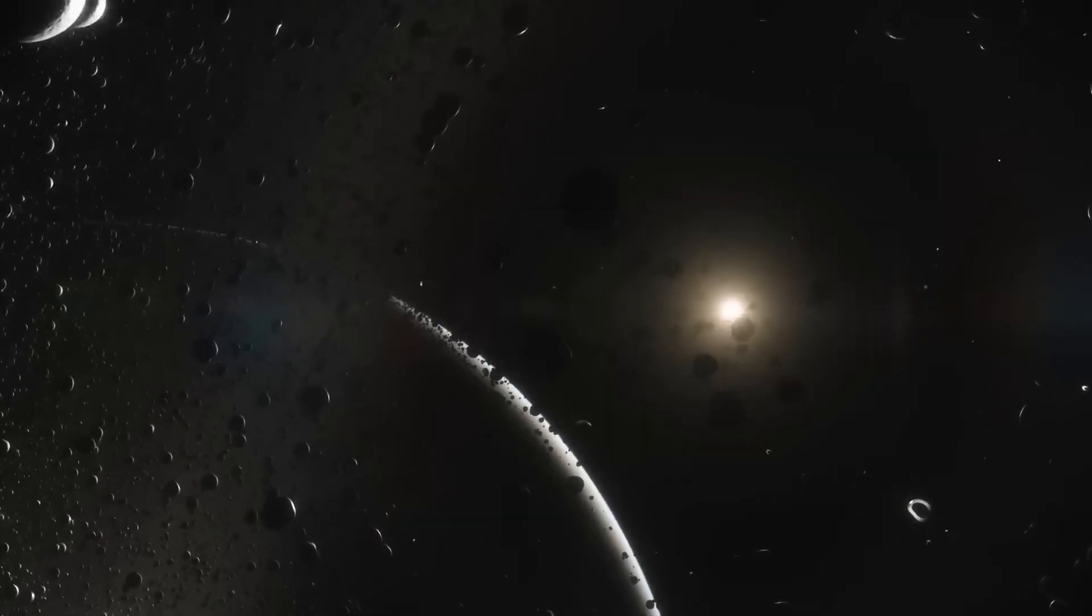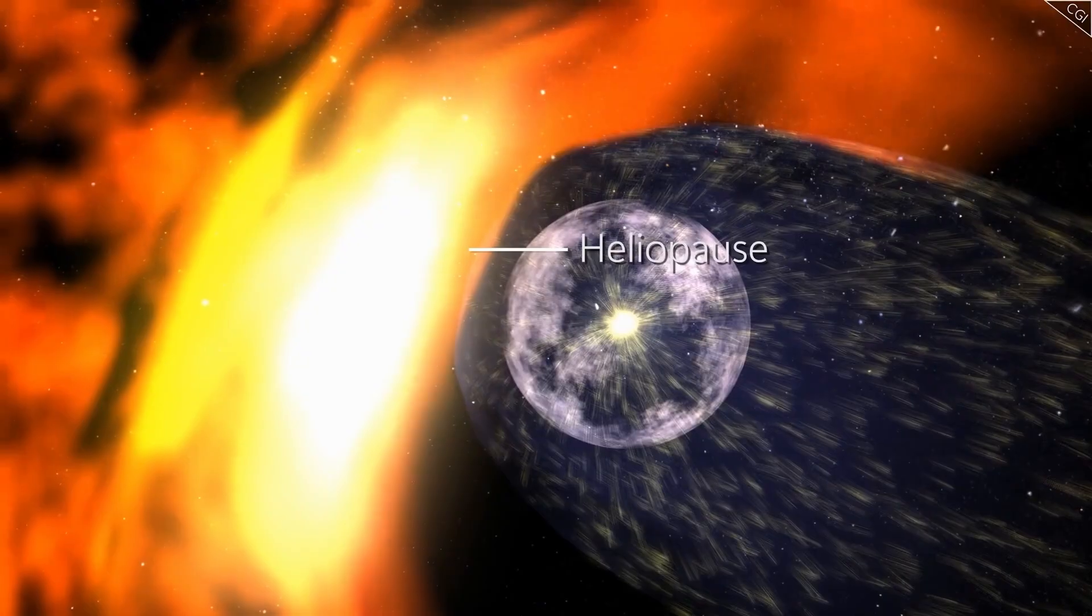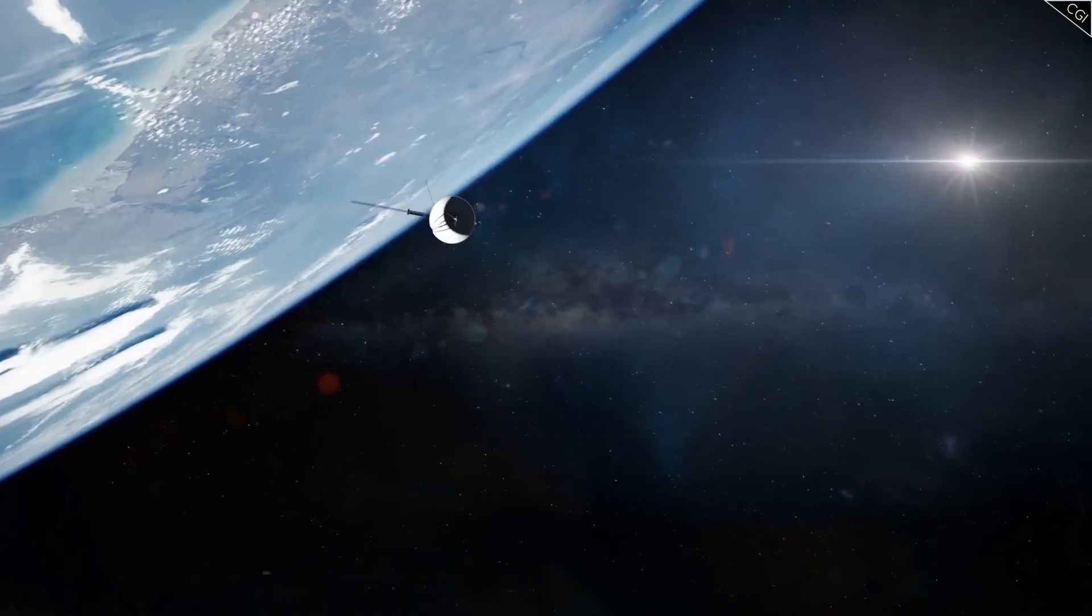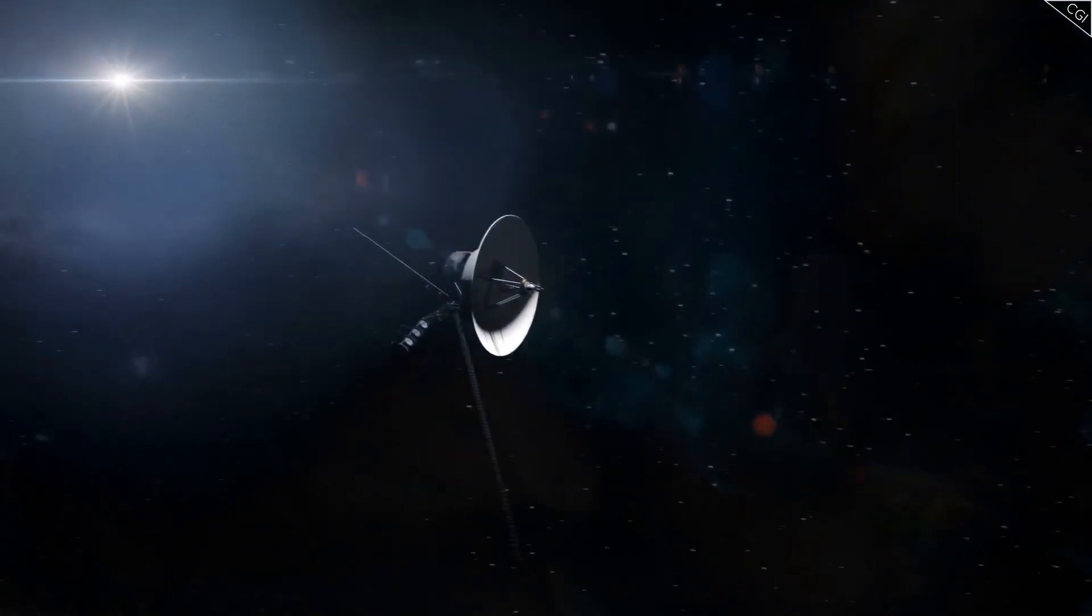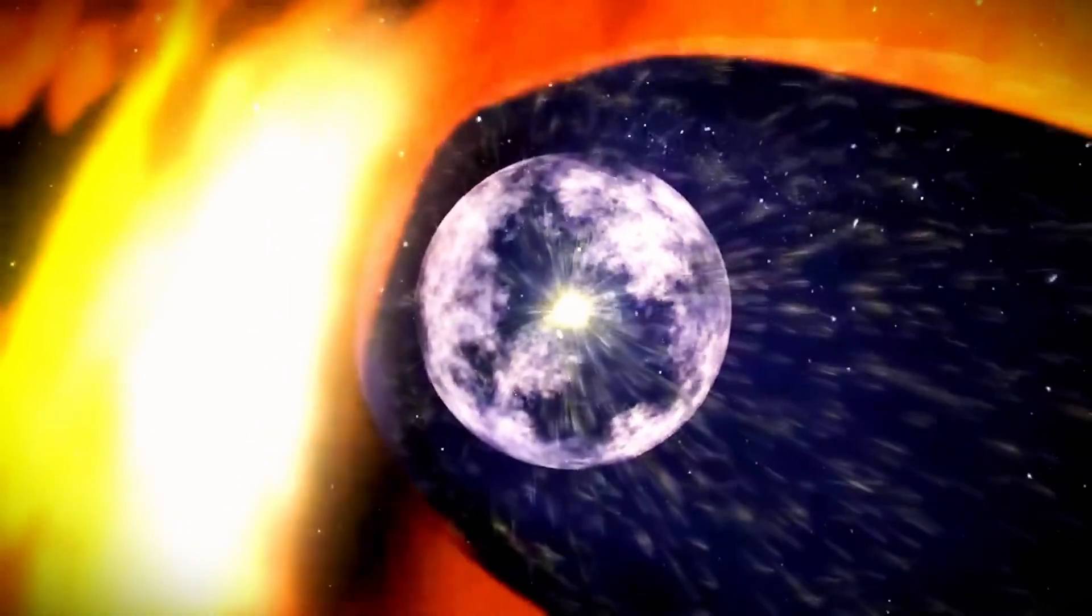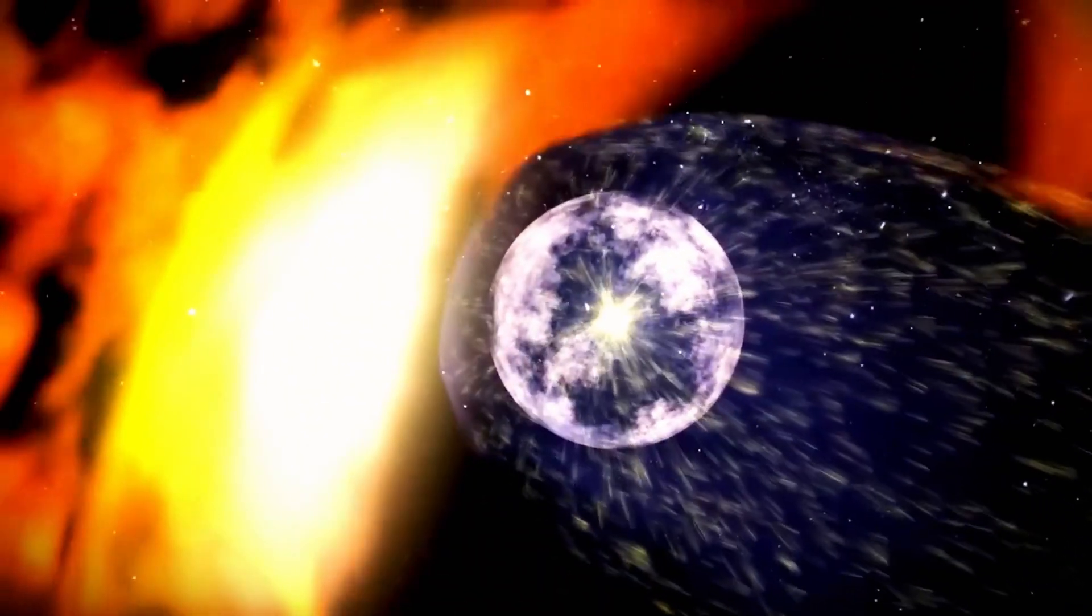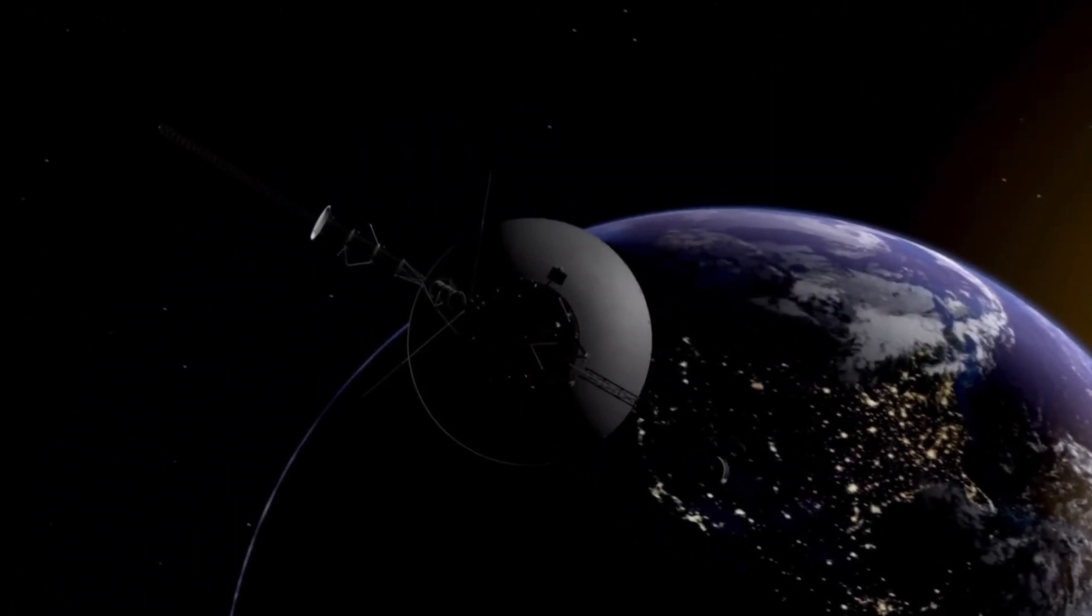The outer edge of the heliosphere, called the heliopause, marks the beginning of interstellar space. Understanding this boundary has profound implications for comprehending the Sun's movement through the galaxy as well as the conditions around other stars. Scientists are especially intrigued by the interactions at this threshold: how the solar wind and interstellar medium mix, the extent of material exchange across the boundary, and the dynamics of this cosmic collision.